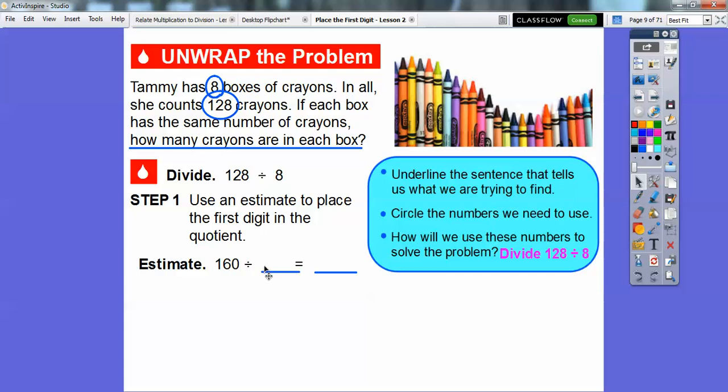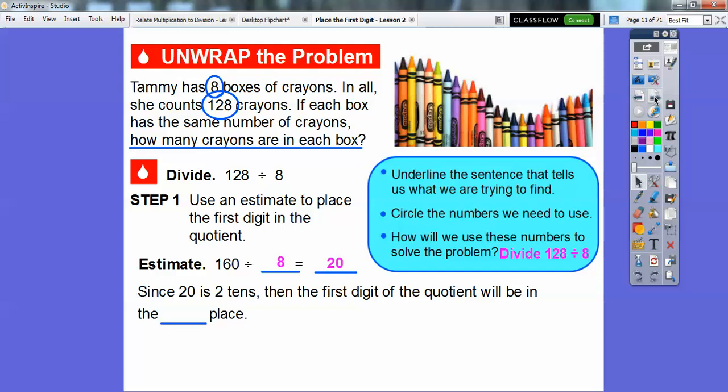So this is going to be 160 divided by 8, and 8 goes into 16 two times, and then with this 0 right here, it's 20 right there. So our answer's going to be a little less than 20, but at least we get a ballpark where we're going to get an answer. So since 20 is two tens, the first digit of the quotient will be in the tens spot. So 20 is two tens, it's going to be in the tens spot right here.